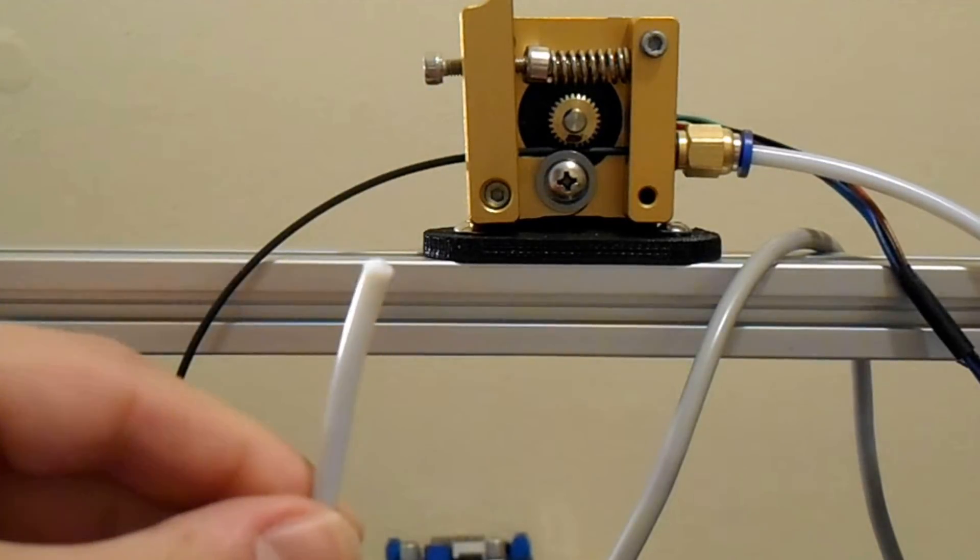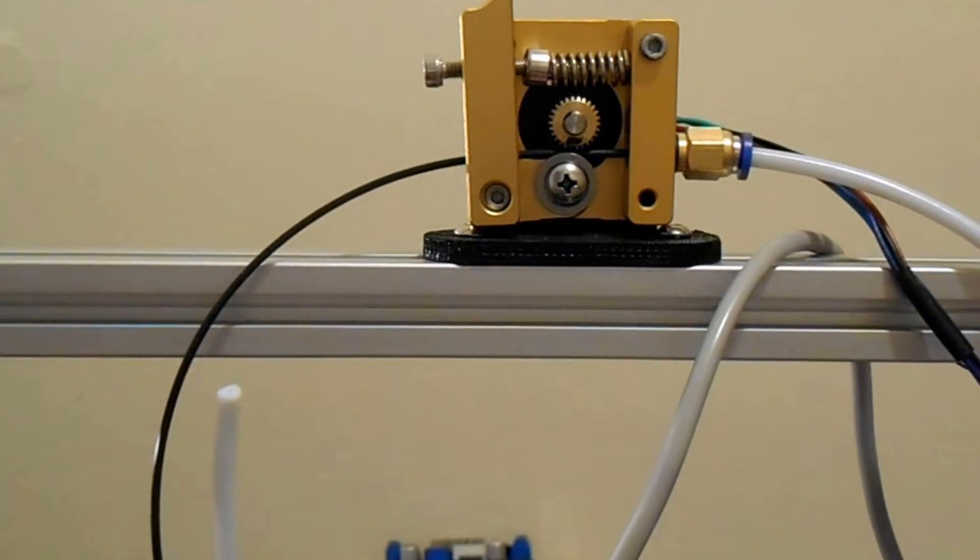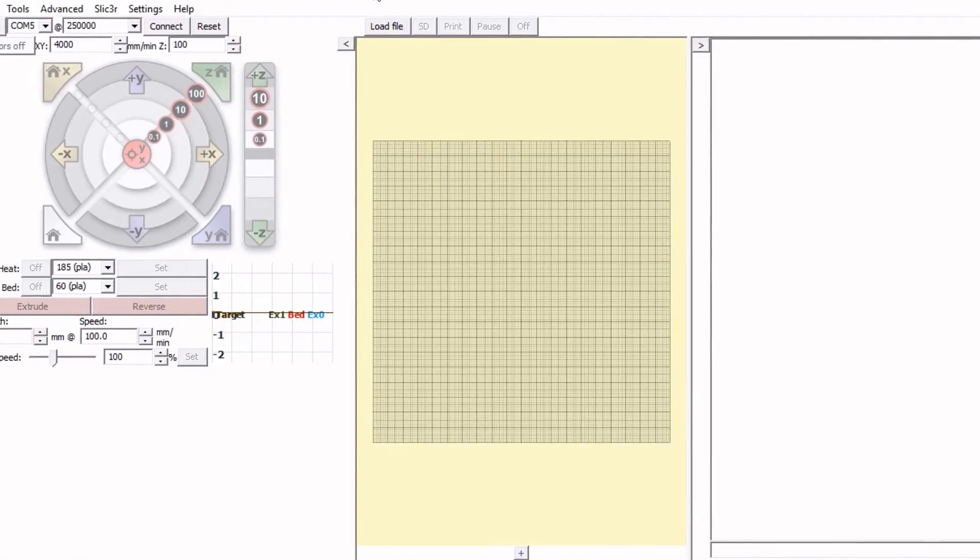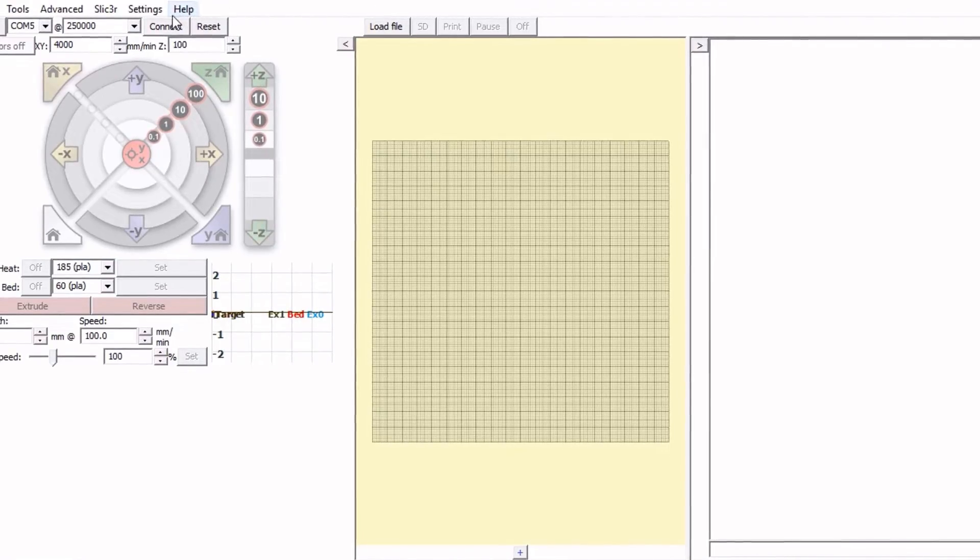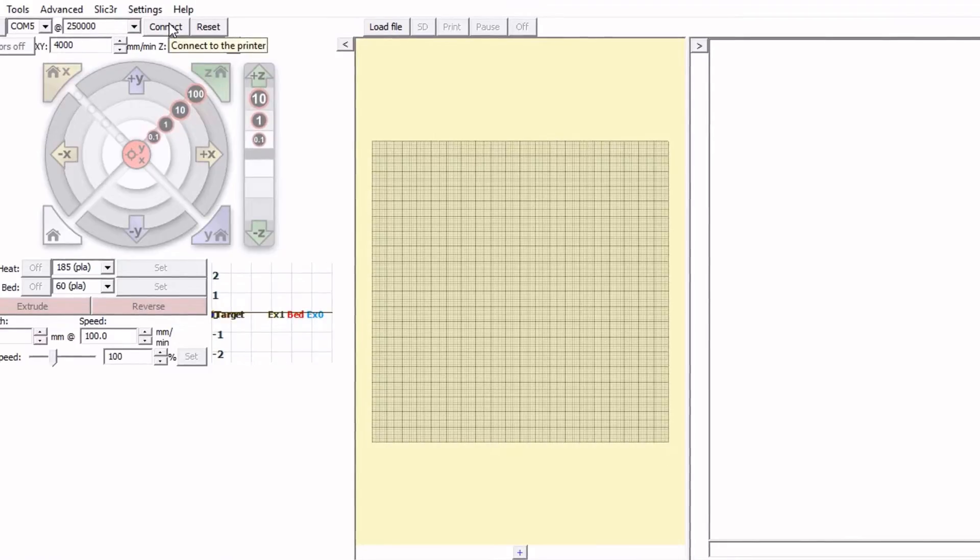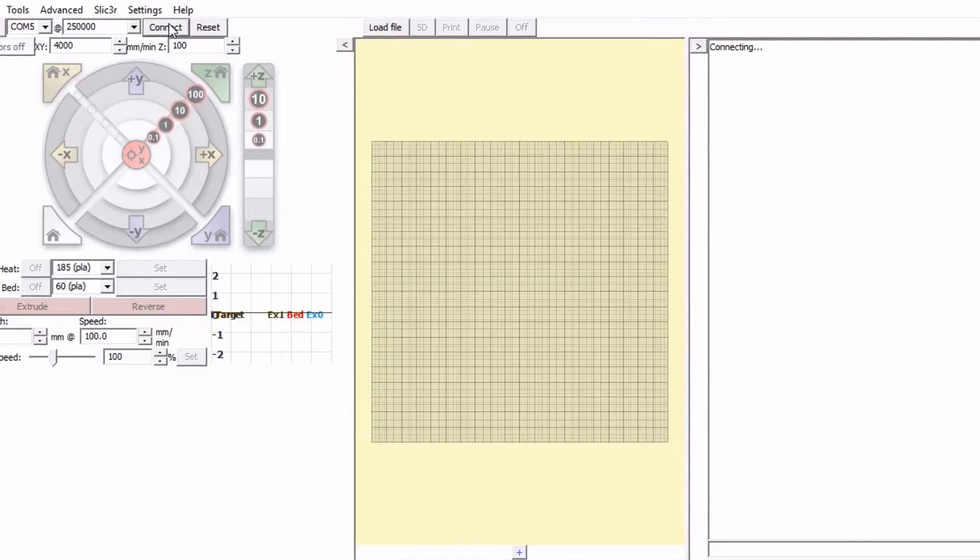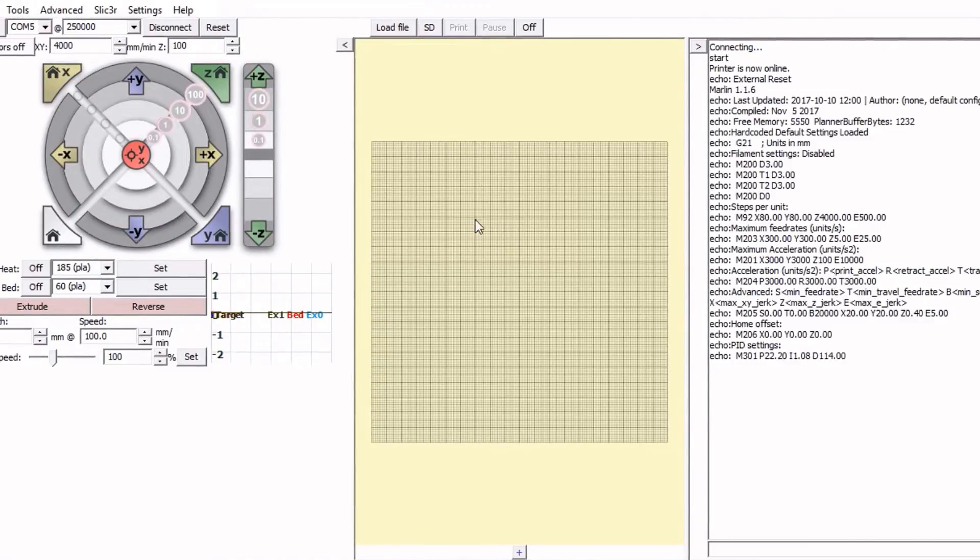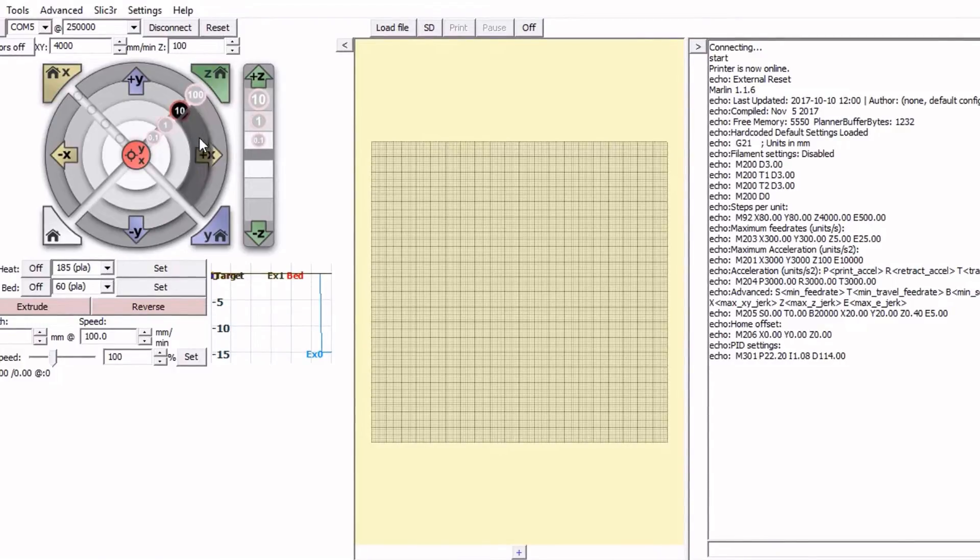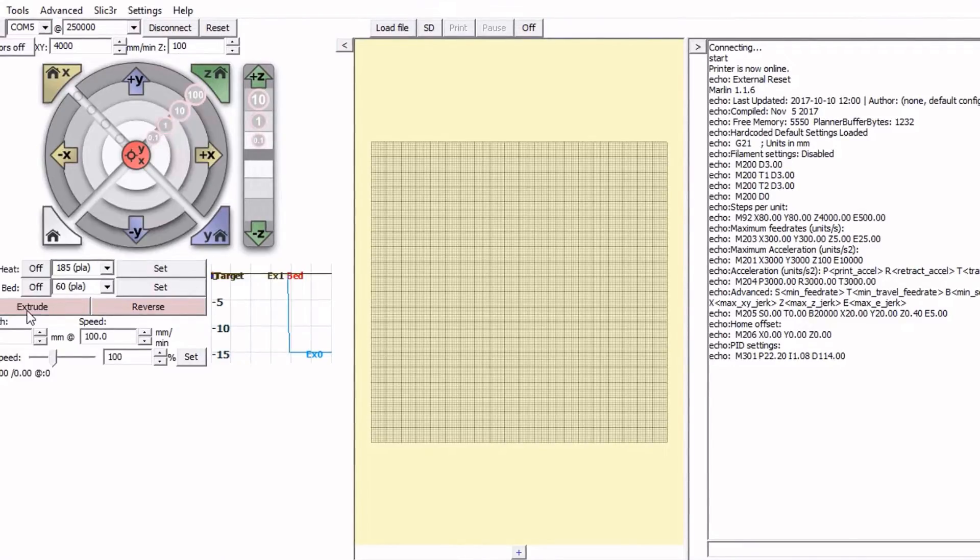Okay, we're in the Pronterface software and connected to the ramps. The ramps is powered up and it also has the power supply connected for the PSU unit or power supply unit. We're going to connect real quick. Next thing we're going to do is check to see if we can move. We do a small move just to verify things. It looks like it worked okay.